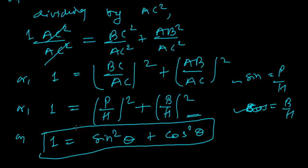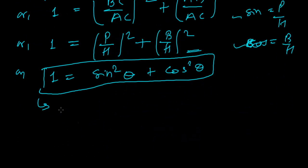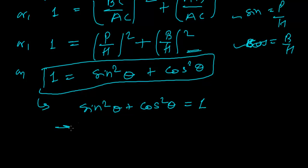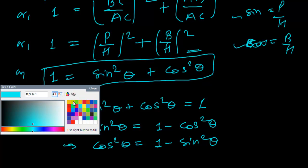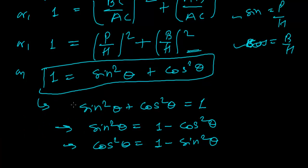So we can write this relationship as: sine squared theta plus cos squared theta equals 1. From this, sine squared theta equals 1 minus cos squared theta, and if we rearrange for cosine, cos squared theta equals 1 minus sine squared theta. These are really, really important relationships — trigonometric identities.